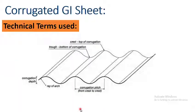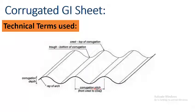There are some technical terms used in corrugated sheets. The top of the corrugation is called the crest and the bottom of the corrugation is called the trough. The distance between two successive crests or troughs is called the corrugation pitch. This measurement is called the corrugation depth, and this line is called the ray of arc.